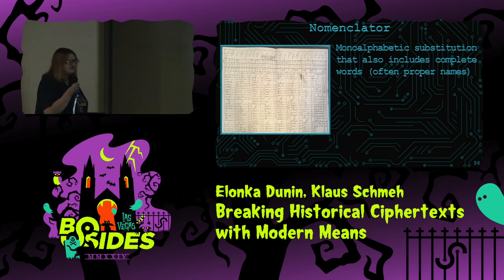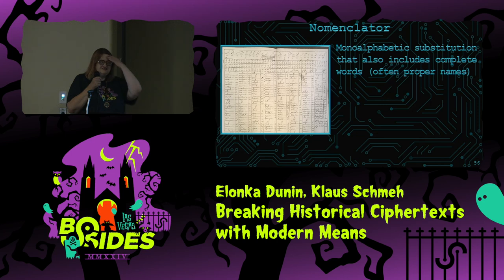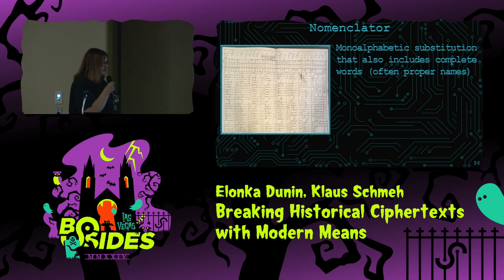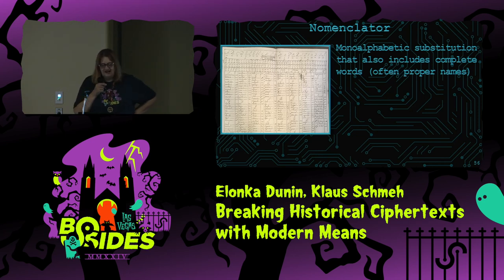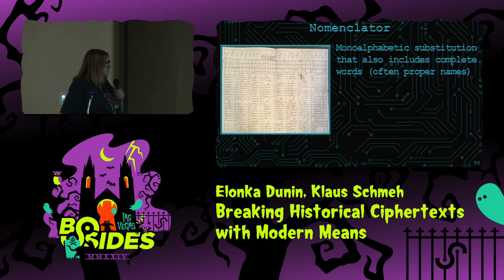Hey, nomenclators. I appreciate everyone being here — I know how hot it is with masks. So, nomenclators: Klaus and I actually had quite the argument for our book on whether to include nomenclators. He convinced me; I have religion now. A nomenclator is sort of a monoalphabetic substitution that also includes complete words. They're often proper names. The term nomenclator comes from the person who would be at an event calling out the names of people as they arrived.